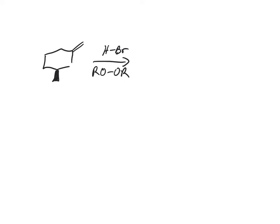Here we have an alkene reacting with HBr — but not normal HBr by itself. This is HBr in the presence of peroxides. A peroxide means two oxygens bonded to each other. So this reaction is going to be different than normal HBr.